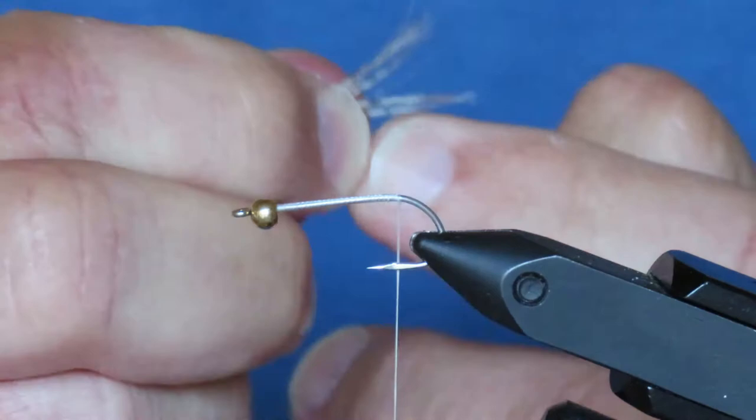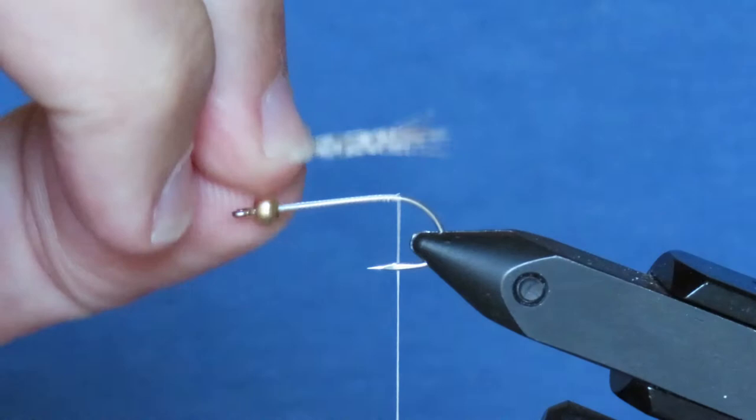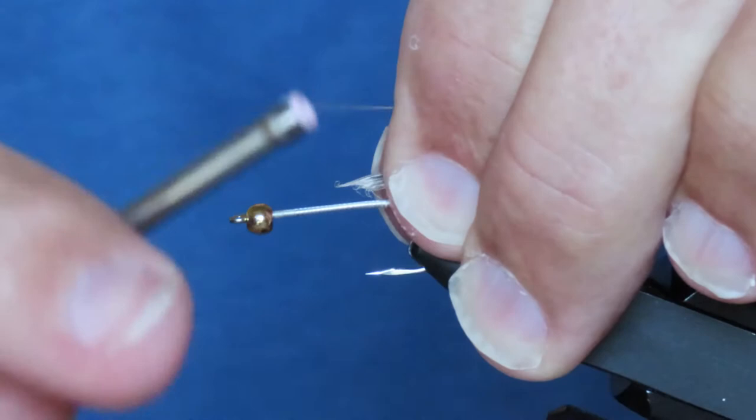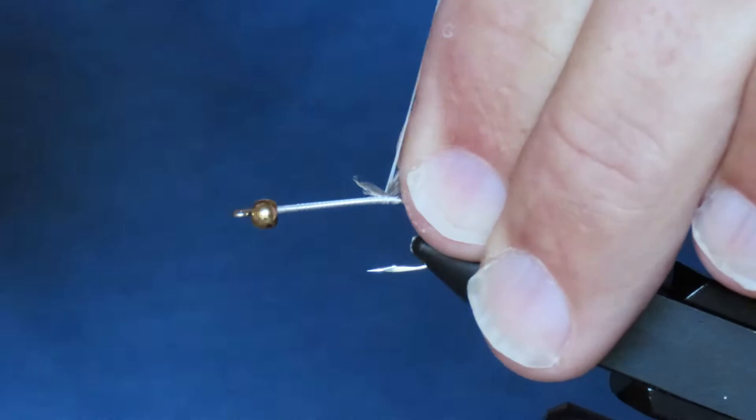Now, you want to carefully transfer the clump of fibers to your left hand, and the length of the tail should be about the length of the hook shank. I'm going to bring the thread up between my finger and thumb, then bind it down tight, like that, and then repeat that once more.